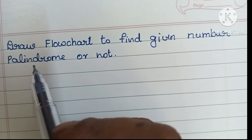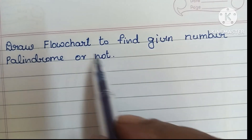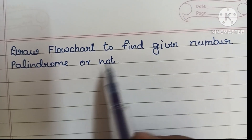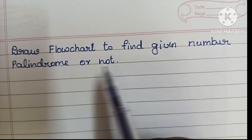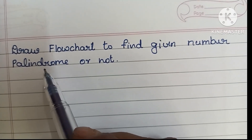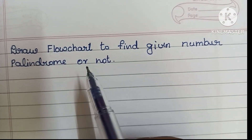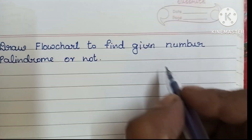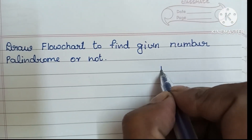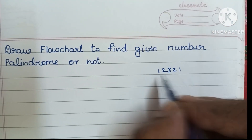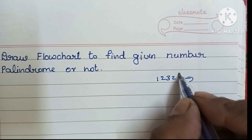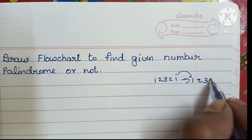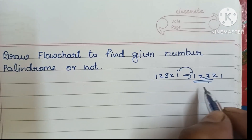Hi guys, in this video we're going to learn how to draw a flowchart to find whether a given number is a palindrome or not. A palindrome is a number that remains the same when its digits are reversed. For example, if the number is 12321, when reversed it is still 12321 — it remains the same.